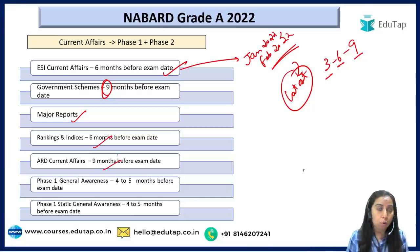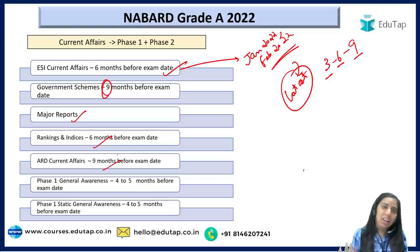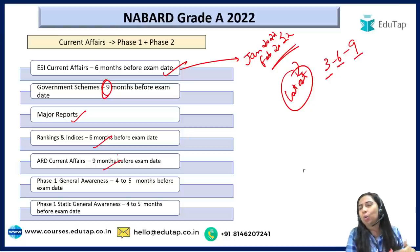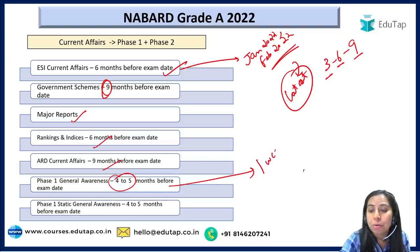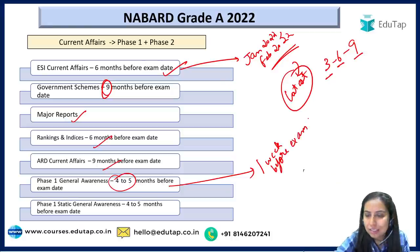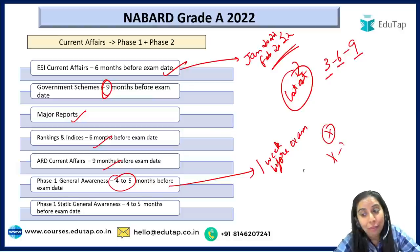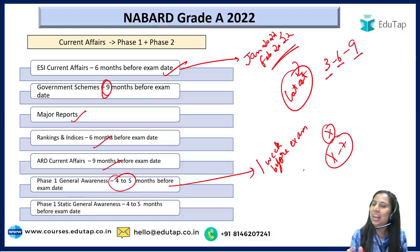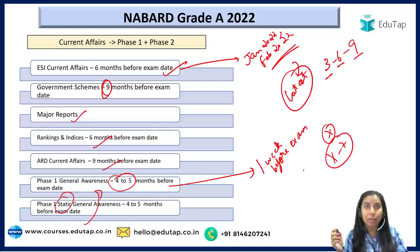For ARD current affairs, my suggestion is to go for nine months, because ARD current affairs are actually less. Phase 1 General Awareness: cover four to five months before the examination date, including up to one week before the exam. So if your exam is on date X, cover current affairs until X minus seven. If four to five months feels too much because you haven't prepared before, then go for three months.